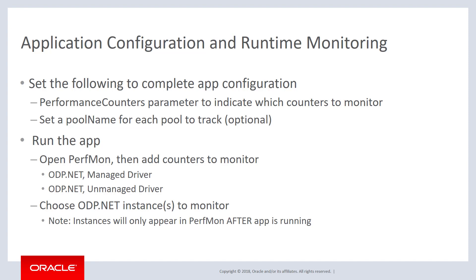Once configured, run your application and then add your counters to monitor in Windows Perfmon, choosing the ODP.NET instance you want to monitor. Importantly, run your application first before trying to find it in Perfmon — if you try to locate your application in Perfmon before it's running, you won't find it because Perfmon can't display counters for something that isn't running yet.